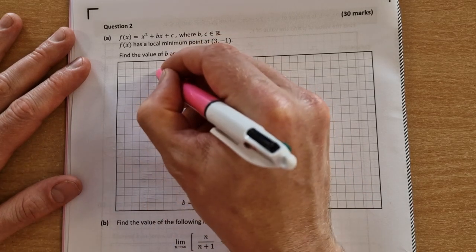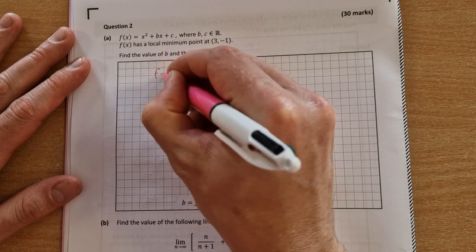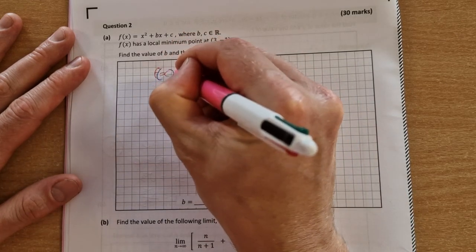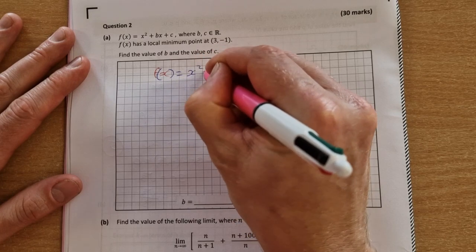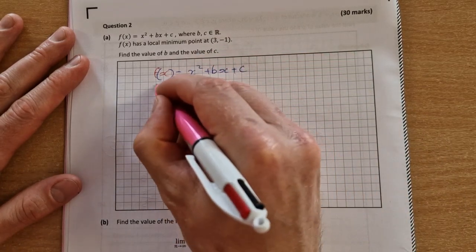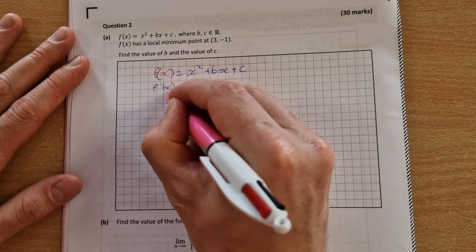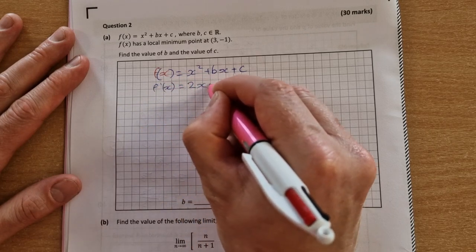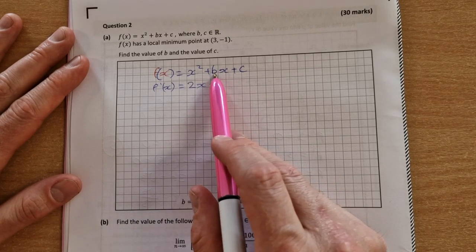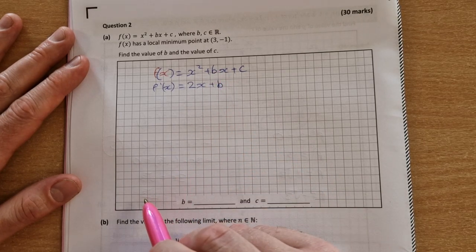So first thing we do is differentiate. f(x) equals x squared plus bx plus c, and then we differentiate it to get f prime of x equals 2x plus b. It doesn't matter that this is an unknown coefficient here, we just differentiate it as normal.